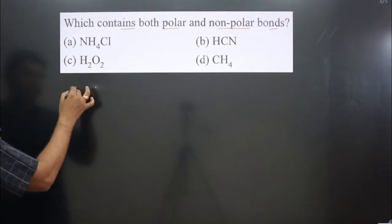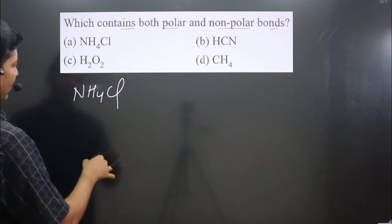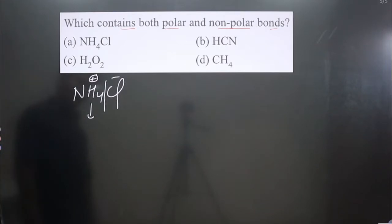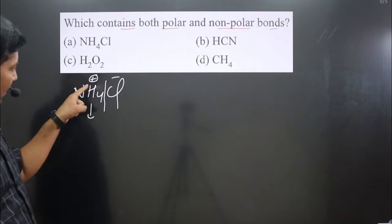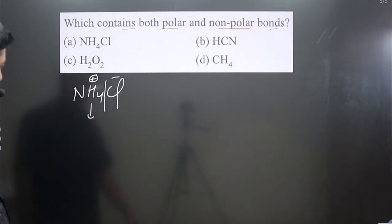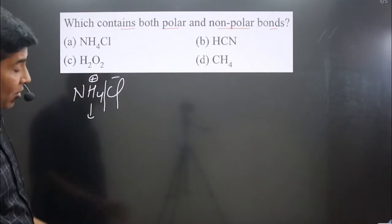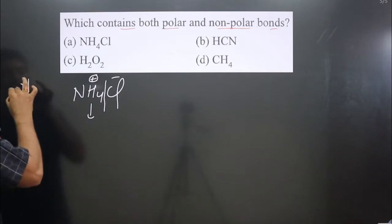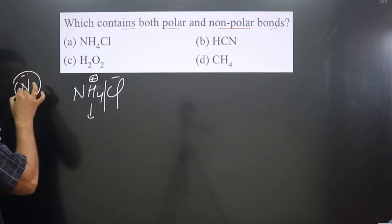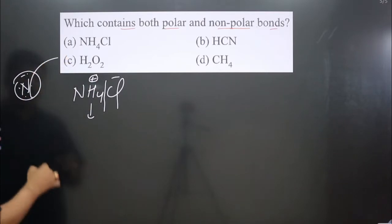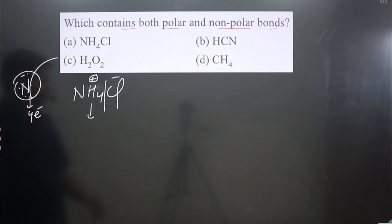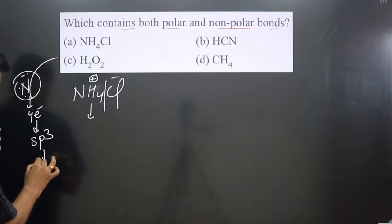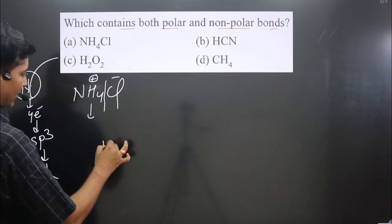The first compound is NH4Cl. This is a salt. If I break it, we get NH4+ and Cl−. For NH4+, nitrogen is forming how many bonds? Nitrogen generally has five valence electrons, but with a positive charge, one electron is removed, leaving four valence electrons. It forms four bonds, so hybridization will be sp3.